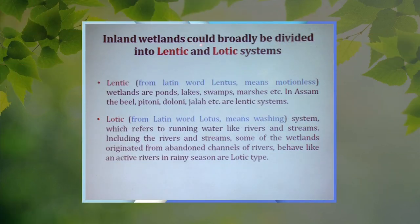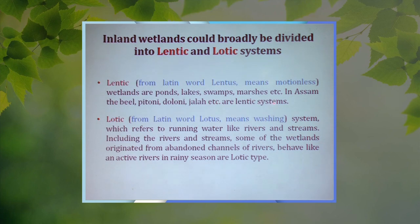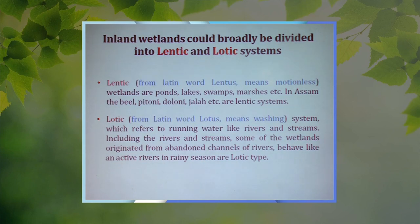Inland wetlands can broadly be divided into two categories: Lentic and Lotic systems. Lentic wetlands are ponds, lakes, swamps, marshes, etc. In Assam, Beel, Pitoni, Dolony, Zola, etc. are Lentic wet systems. Lotic systems refer to running water like rivers and streams. Including rivers and streams, some wetlands originated from abandoned channels of rivers and behave like active rivers in the rainy season or as Lentic types.